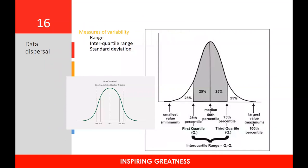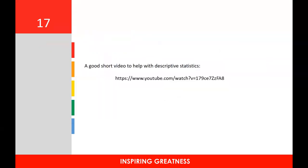We also look at how data is dispersed around the mean. The range is the spread from the smallest to the largest value. The interquartile range captures the middle 50% of the data. The standard deviation is a calculation showing the amount of variation around the mean, squared from the variance. For a good refresher on how to calculate variance, mean, median, mode, and standard deviation, please copy the provided link into your search engine — it's a short video that will remind you how to do your own descriptive statistics.